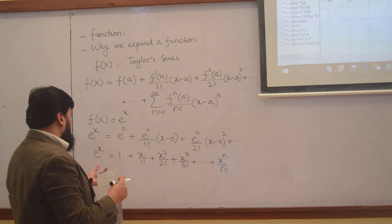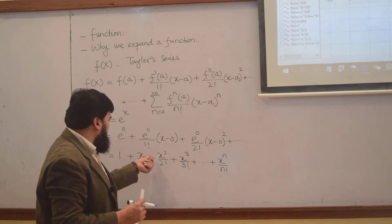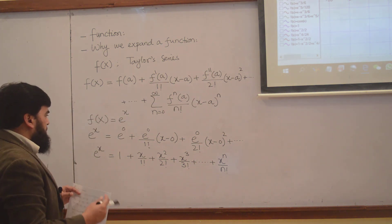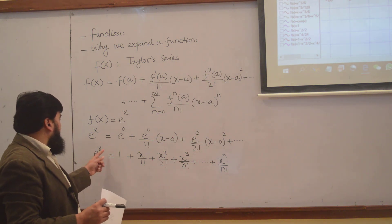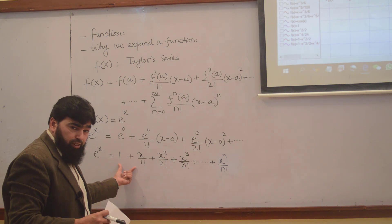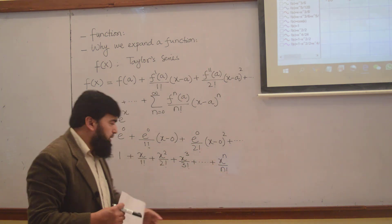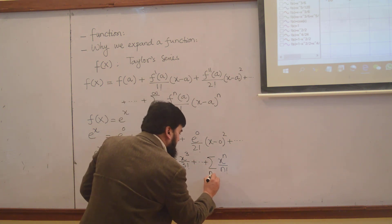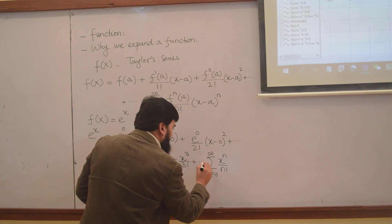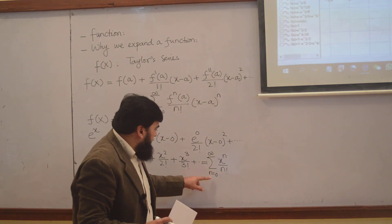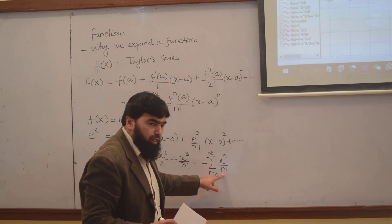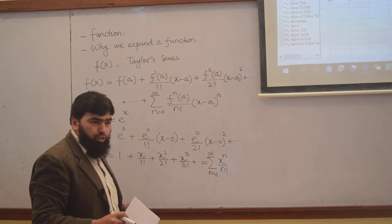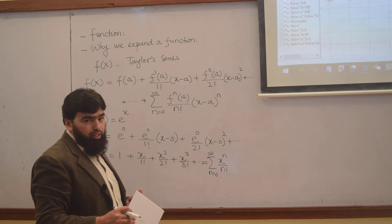So e to the power x equals 1 plus x plus x squared over 2 plus x cubed over 3, and so on. There are infinite number of terms, since n runs from 0 to infinity, giving x^n over n factorial. Putting n equal to 0 gives the first term, n equal to 1 gives x, n equal to 2 gives x squared over 2, n equal to 3 gives the next term.